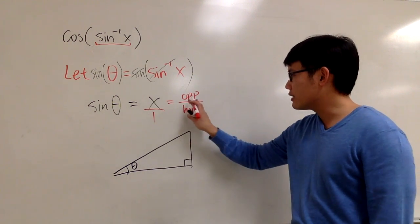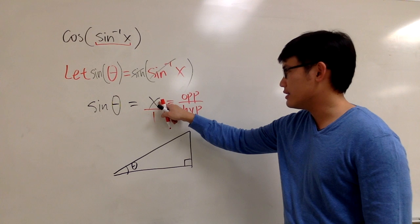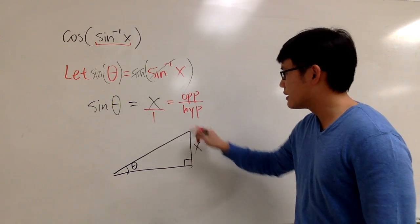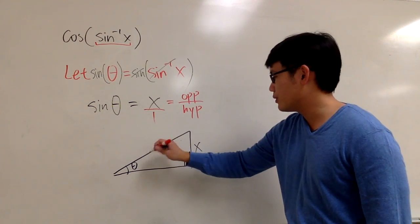And by looking at this part, we know that the opposite can be written as x, and I can label the opposite side right here as x. And hypotenuse can be 1. So I'll put down the 1 right here.